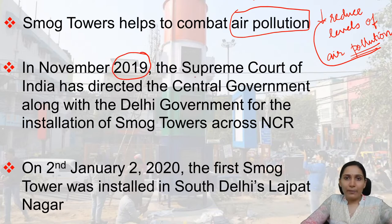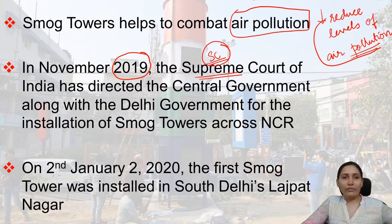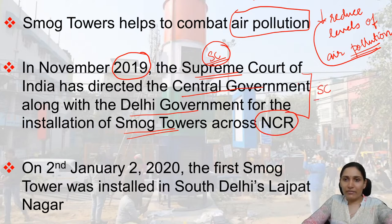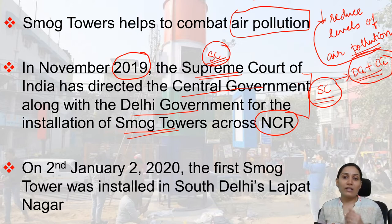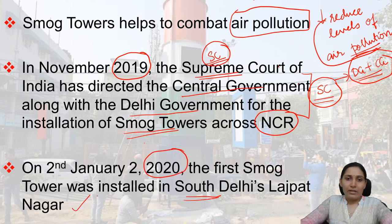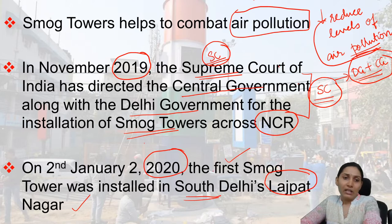In November 2019, the Supreme Court of India directed the central government along with the Delhi government for the installation of smog towers across the NCR (National Capital Region). On 2nd January 2020, the first smog tower was installed in South Delhi's Lajpatnagar.